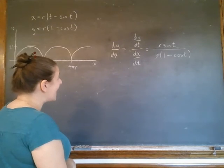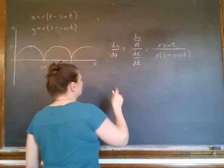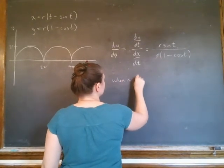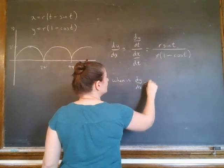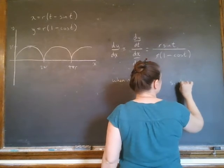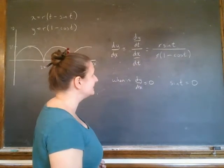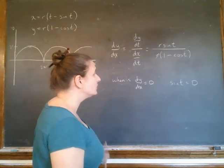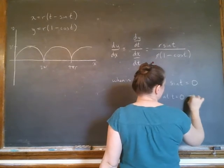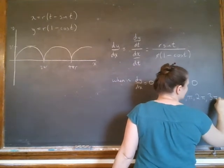So dy/dx is going to be 0. When is dy/dx equal 0? So the top is equal to 0. When is sine t going to be equal to 0? Sine t is going to be equal to 0 at t being 0, pi, 2 pi, 3 pi, etc.